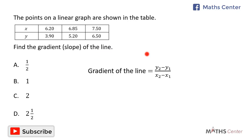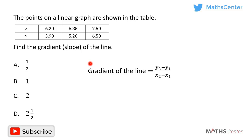The gradient or slope of the line is given by the formula: y2 minus y1 divided by x2 minus x1. To get the gradient or slope, we need two points that fall on the line. We can pick any two points — the first and second, the second and third, or the first and third. Any of them will work, but here I'm going to use the first one and the second one.